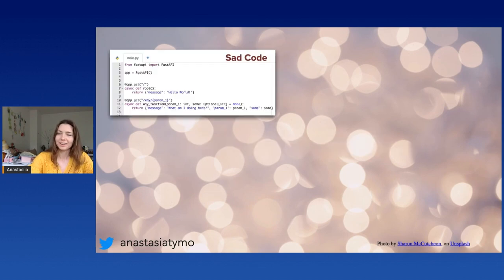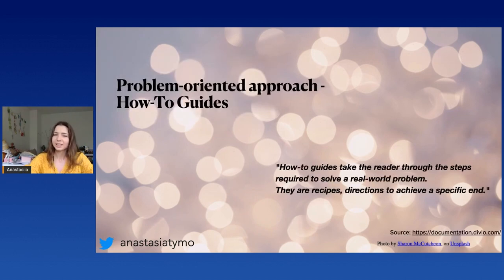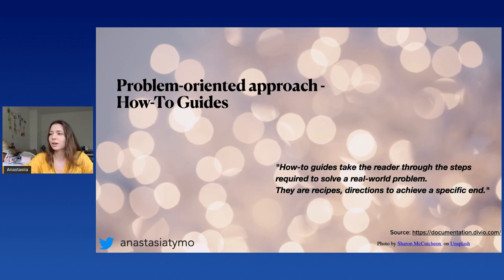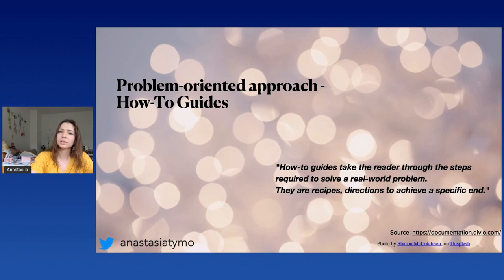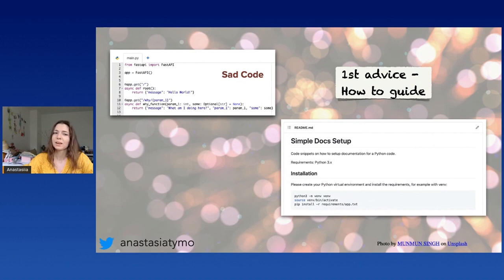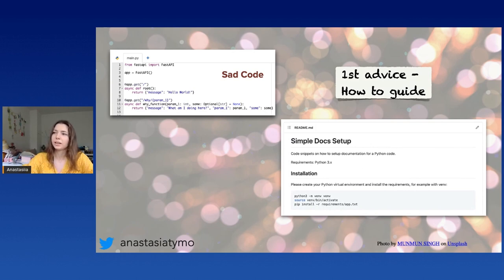The first piece of advice showed the sad code how to use a problem-oriented approach to show the world how to solve the problem, if there are any in the future. This approach includes writing how-to guides — like a recipe where you go step by step and then achieve something in the end. For example, if you want to set up simple documentation for your code, you can add a simple readme file to guide the developer through the installation steps, maybe collaboration steps. That would be a good start.